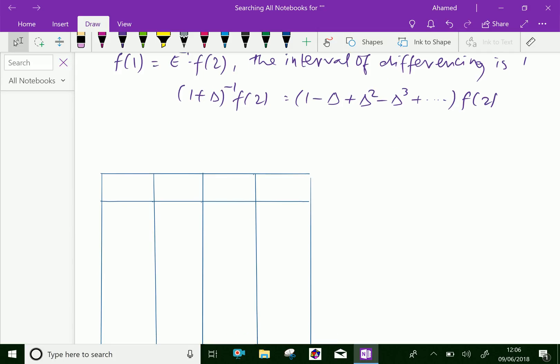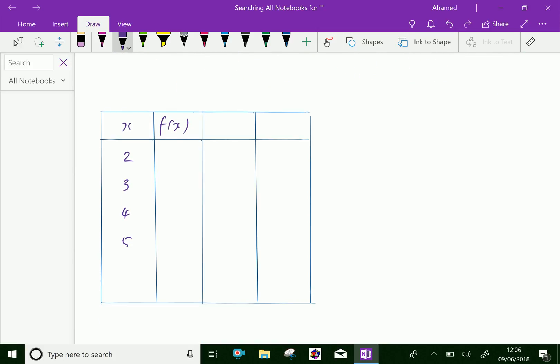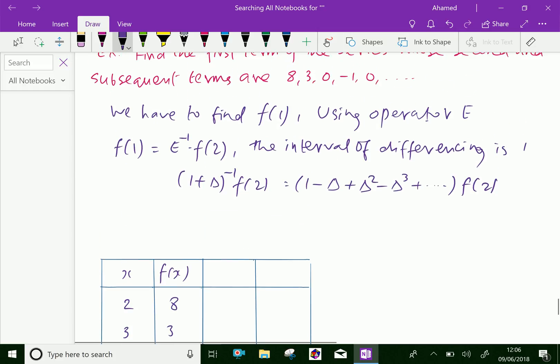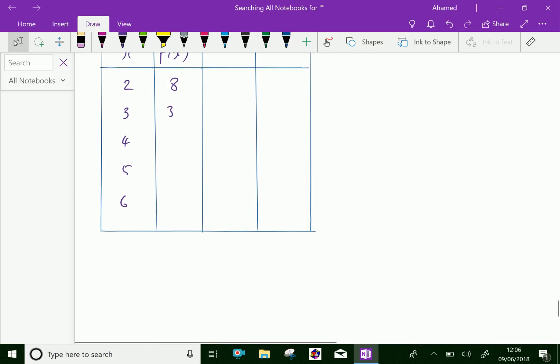Now we will fill the table: x, f(x). So 2, 3, 4, 5, and 6 for x values. Then the second value of f(x): from the given numbers 8, 3, 0, minus 1, and 0.